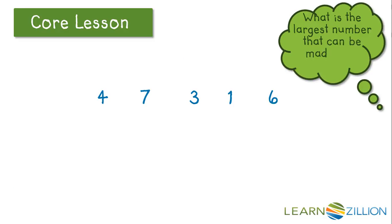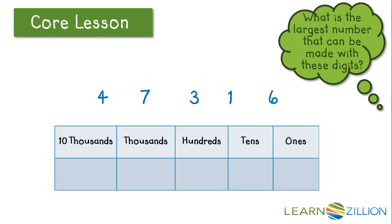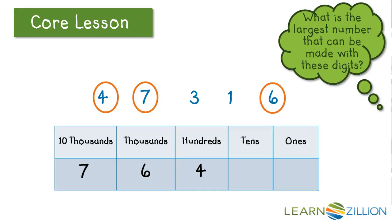What is the largest number that can be made with these digits? Here we have a 4, 7, 3, 1, and 6, and we want to arrange them to make the largest number possible. Using a place value chart, I know that I want my largest digit to be in the place that has the largest value. So I will take my 7 and put it in the ten thousands. The next largest digit is a 6, and I will put that in the thousands. Then we have a 4 for the hundreds, a 3 for the tens, and a 1 for the ones. I've created 76,431. This is the largest possible number that can be created with these digits.